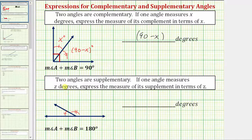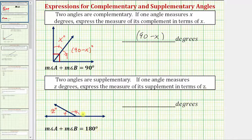So if one angle measures z degrees — let's say this angle measures z degrees — we're asked to express the measure of its supplement, which should be this angle, in terms of z. And because the sum of the measures equals 180 degrees, the measure of the second angle must be 180 minus z degrees.